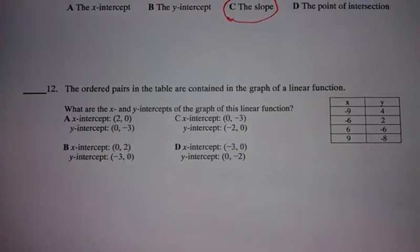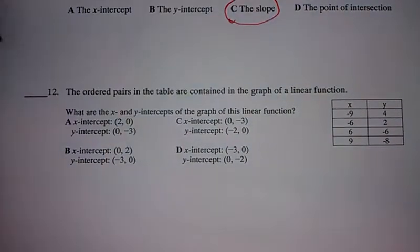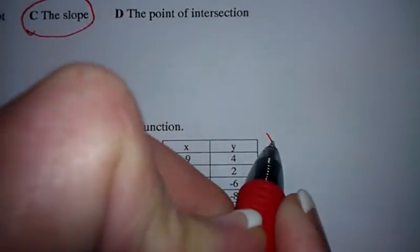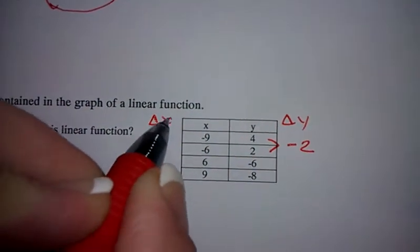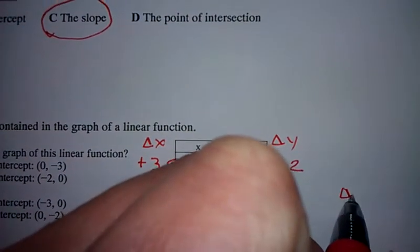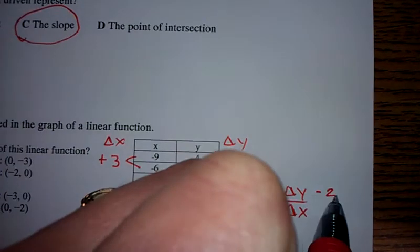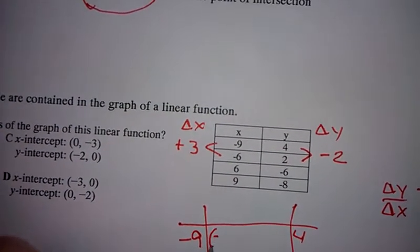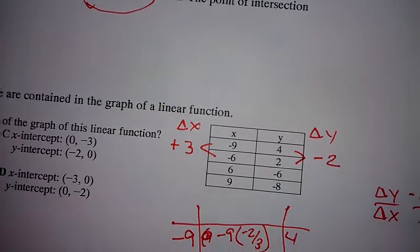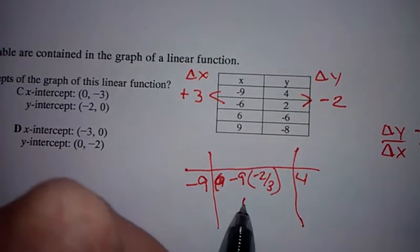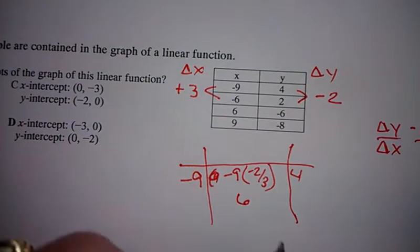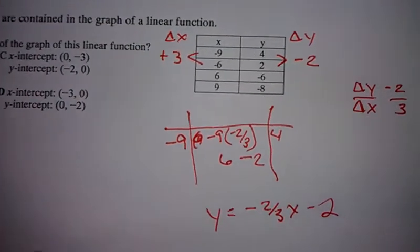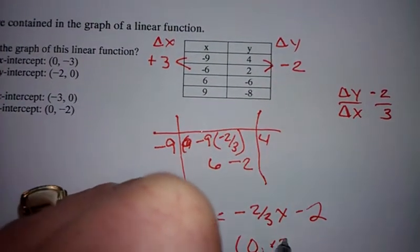Next, right here it says the ordered pairs in the table are contained in the graph of a linear function. What are the x and y intercepts of the graph of this linear function? Okay, so what we're going to need to do is come over here to this table and find the equation. So I'm going to do delta y. The change in y is minus 2. Delta x is plus 3. So the slope, delta y over delta x, negative 2 over 3. I'm going to kind of build my table a little bit bigger or farther out so I have more room. I'm going to have, oh, let's see what I'm going to need to put here. Negative 9 times negative 2 thirds. When you multiply these two together, you end up with a positive 6. What do you have to do to 6 to get to 4? Well, you need to subtract 2. So my equation is negative 2 thirds x minus 2. Well, just from that right there, I know my y intercept is 0, negative 2 because that's always my y intercept.